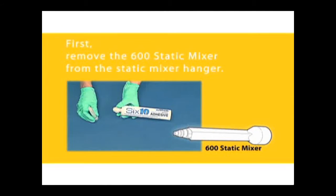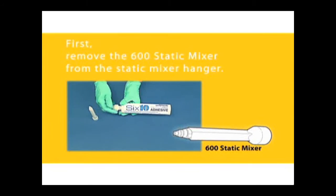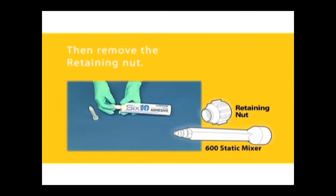First, remove the 600 Static Mixer from the Static Mixer Hanger. Then, remove the retaining nut.